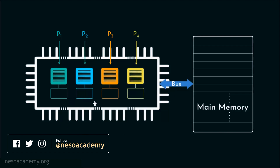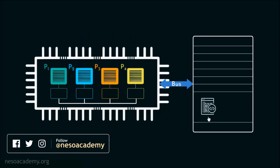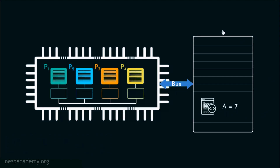Additionally, all the different private caches are interconnected with the help of the internal bus. Now suppose inside the main memory we have a program code which has a global variable 'a' initialized to 7. Consider a situation where this entire organization works as an MISD — that is, Multiple Instruction stream Single Data stream — meaning all these different processors will operate on the same data, that is 'a'. Suppose processor P1 wants to perform the operation a+1, meaning it wants to increment the value of 'a' by 1.